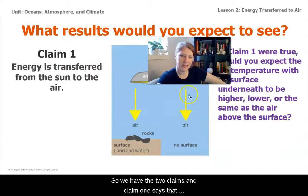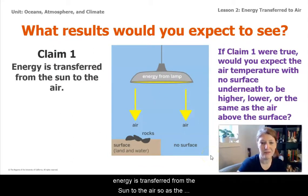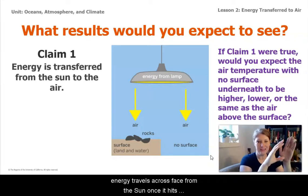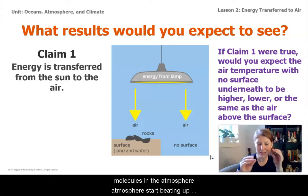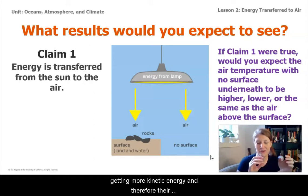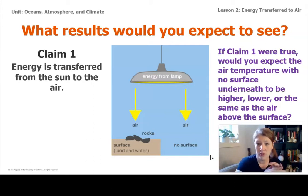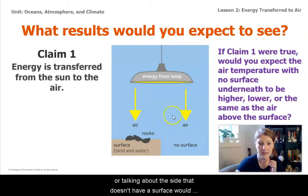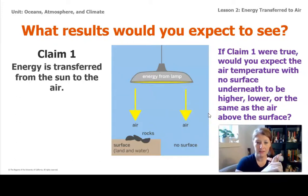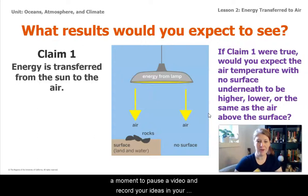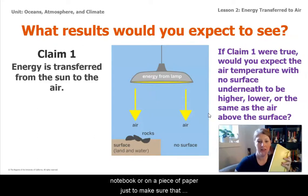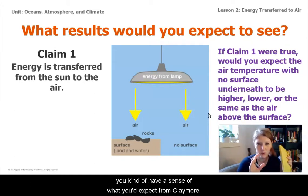So we have the two claims. Claim one says that energy is transferred from the sun to the air — as the energy travels across space from the sun, once it hits earth's atmosphere, it begins to transfer energy, and the molecules in the atmosphere start speeding up, getting more kinetic energy, and therefore their temperature begins to increase. So if claim one were true, would you expect the air temperature with no surface — the side that doesn't have a surface — to go higher, to go lower, or to stay the same as the air above the surface? Take a moment to pause the video and record your ideas in your notebook or on a piece of paper, just to make sure you have a sense of what you'd expect from claim one.